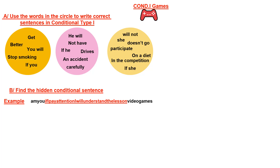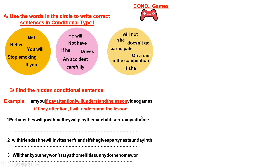For game number two, you have a series of letters, and inside this chain of letters there is a hidden sentence in conditional type 1. What you do is try to find it out. For example, starting at the letter I: 'If I pay attention, I will understand the lesson.' Now do the same for the following examples — read carefully and extract the hidden sentences in conditional type 1. For timing, do not spend more than three minutes. If you finish within three minutes, then you are excellent; if not, keep trying.